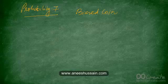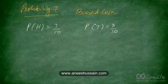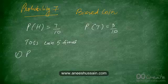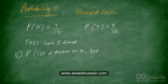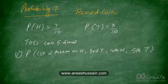Let's do an example based on this idea. Assume we have a coin which is biased such that the probability of getting a head is 7 out of 10 and the probability of getting a tail is 3 out of 10. The question requires you to toss this coin five times and asks: what is the probability that out of those five tosses we get the first two as heads, the third as a tail, the fourth as a head, and the fifth as a tail? This is a specific order, so we write down the exact sequence.